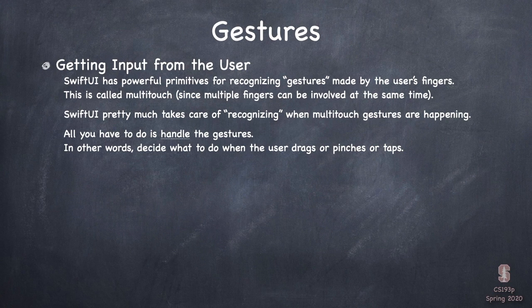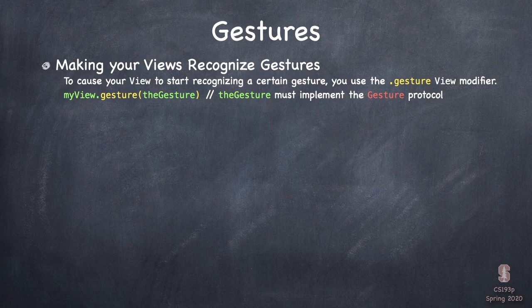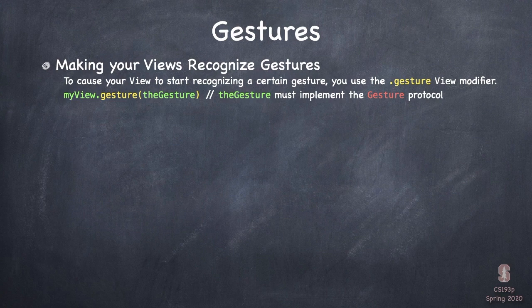It's not just recognizing gestures that matters. Once SwiftUI recognizes that a pinch is happening, you and your code have to handle the gesture. There's recognizing it — SwiftUI does that — and then there's handling it, which you have to do. Handling it means deciding what to do when there's a pinch, drag, or tap. To make your Views recognize a gesture, there's just a ViewModifier on View called `.gesture`, and you pass a gesture that implements the gesture protocol.